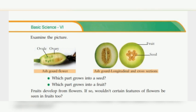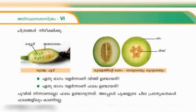Self-pollination means the pollen from the same plant fertilizes its own flower. Do both types of pollination occur in plants like cucumber, bittergourd, pumpkin, etc.? Yes, these two types of pollination occur in such plants.